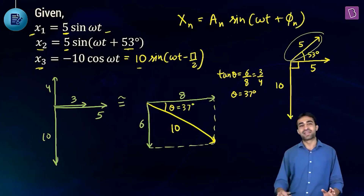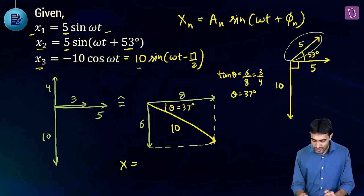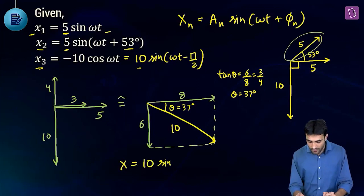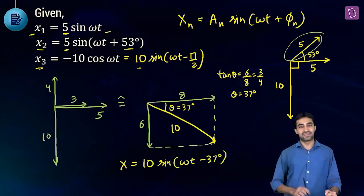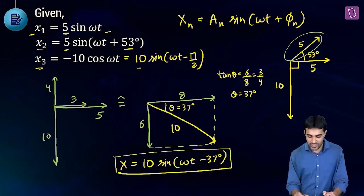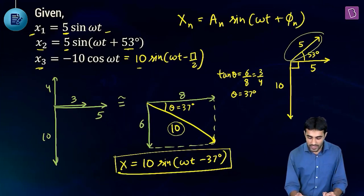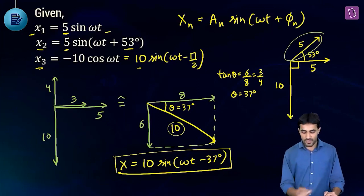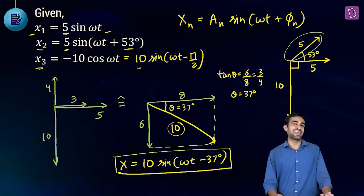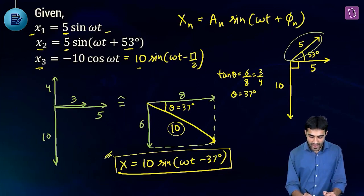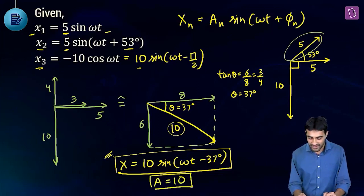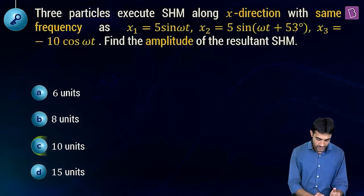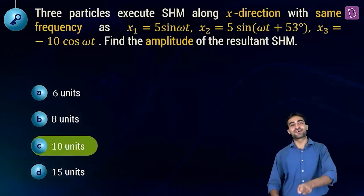So the resultant equation is x = 10·sin(ωt − 37°). This corresponds to a phasor of magnitude 10 making an angle of 37° below the horizontal. The amplitude of the final resultant SHM is 10 units. We mark option C as the correct answer.